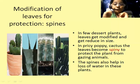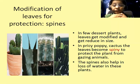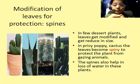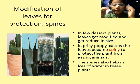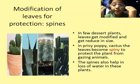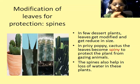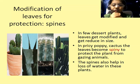Modifications of leaf for protection — spines. In a few desert plants, leaves get modified and get reduced in size. The prickly poppy and the cactus leaves become spiny to protect the plant from grazing animals. The spines also help in reducing loss of water in these plants.